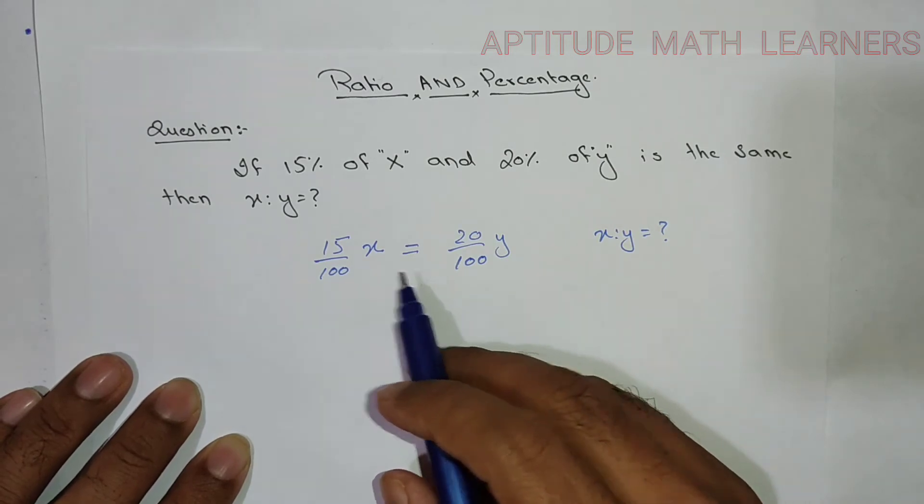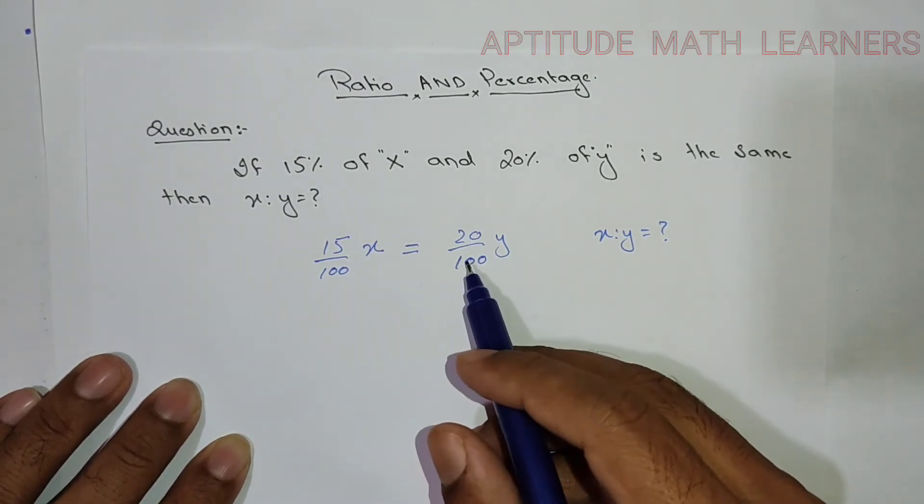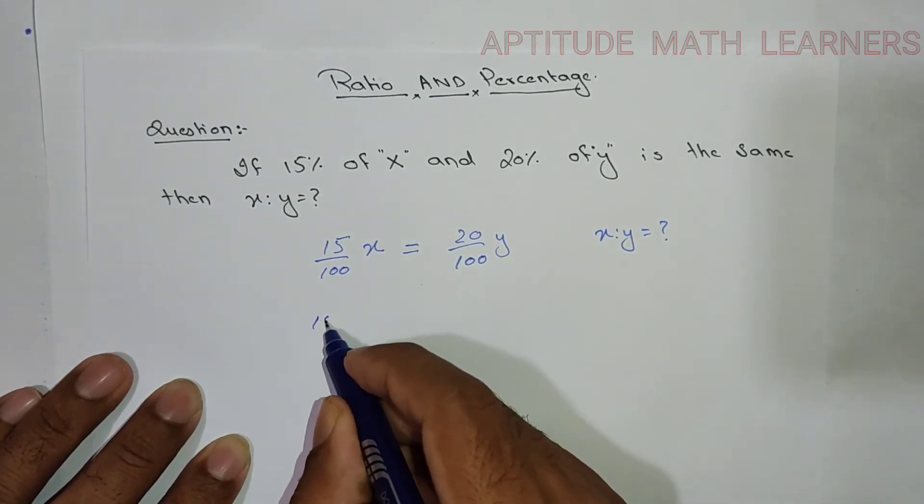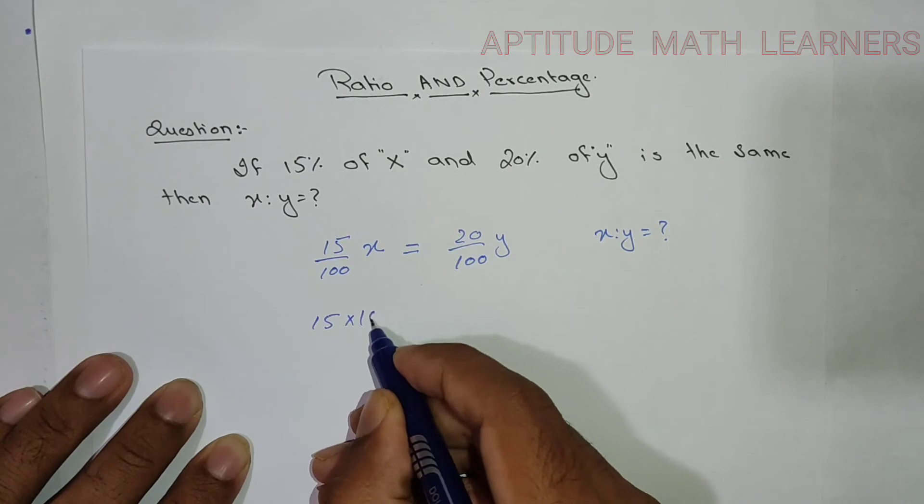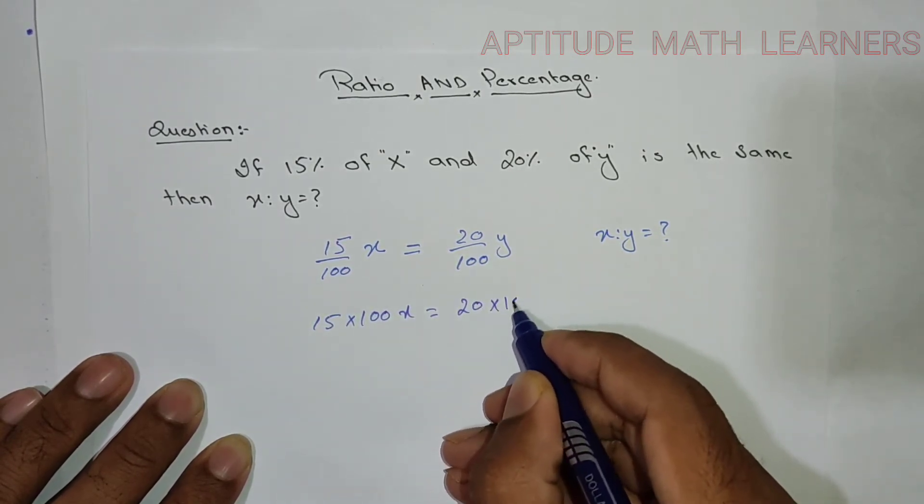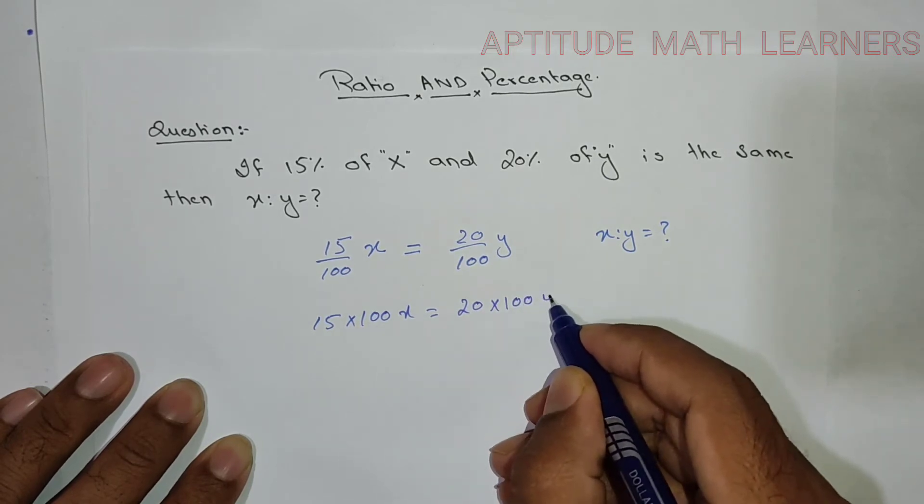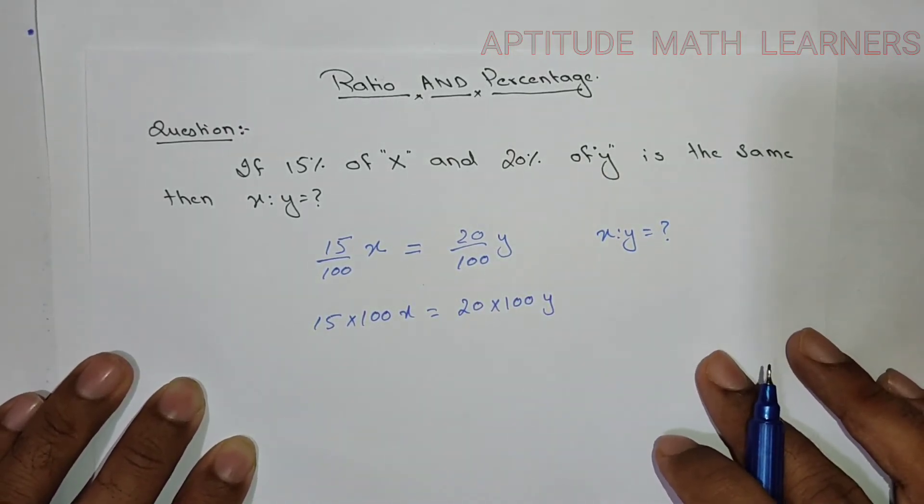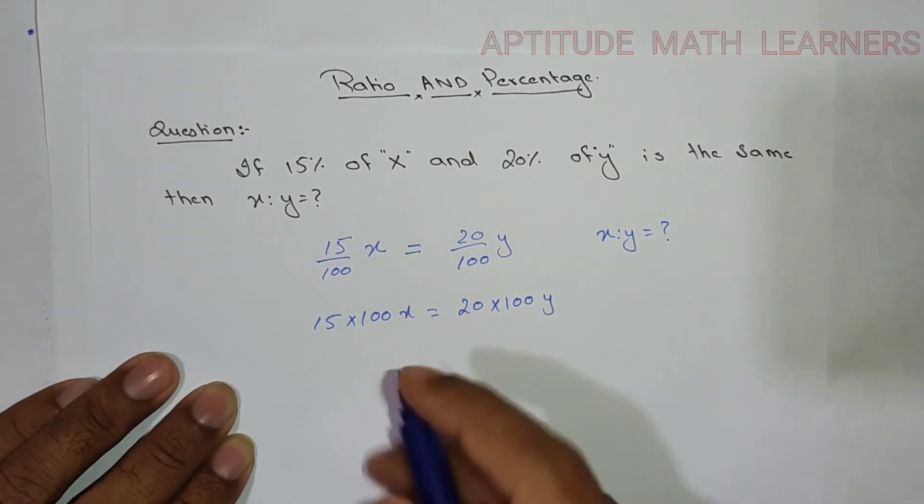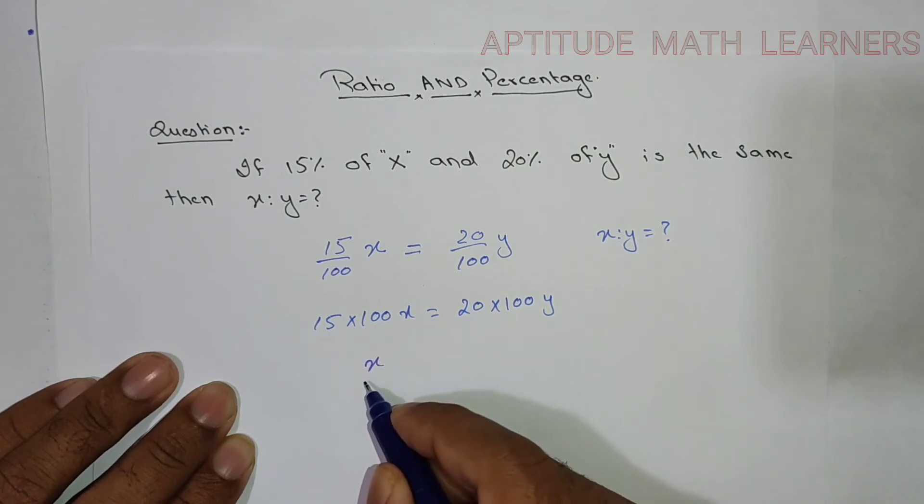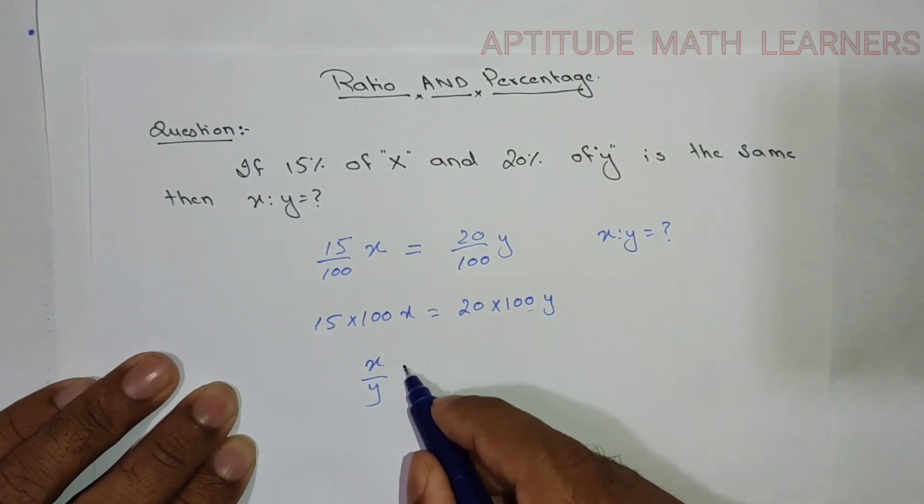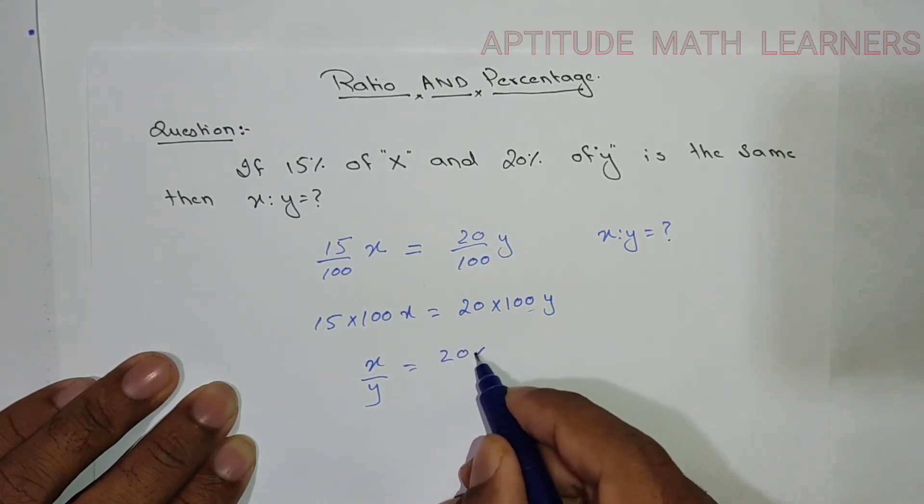If we cross multiply both, it means that 100 goes upward and on this side it becomes 15 × 100 × x is equal to 20 × 100 × y. We have to bring it in the ratio form x ratio y, so x upon y. This y goes downward, so it's equal to 20 × 100 upon...